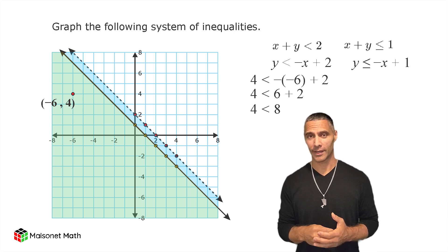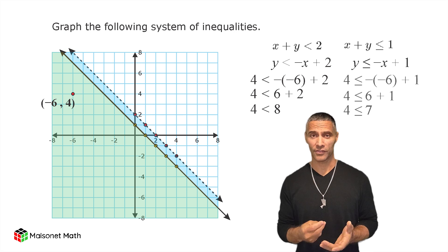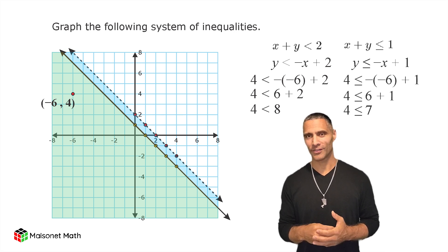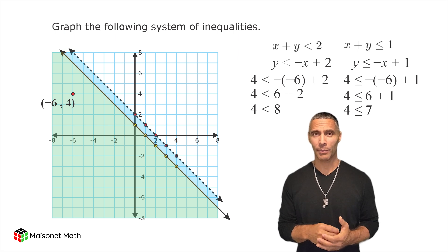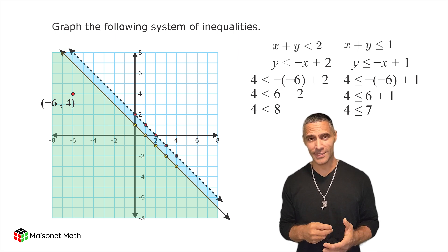For y is less than or equal to negative x plus 1, we have 4 is less than or equal to 6 plus 1, which when simplifying gives us 4 is less than or equal to 7, which is also true. Because both inequalities are satisfied, the point negative 6 positive 4 is a solution to the system.